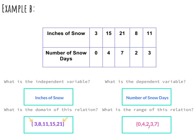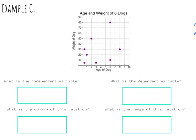Now let's take a look at Example C. This time we're given a graph and asked again about independent and dependent variable as well as domain and range. The x label on our graph tells us the independent variable is the age of the dog. Looking along the y-axis, the dependent variable is the weight of the dog. We need to list the domain by going horizontally, and the range by going vertically across the graph.